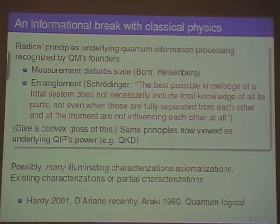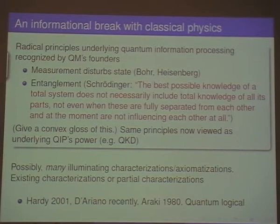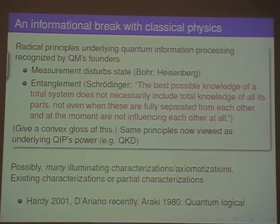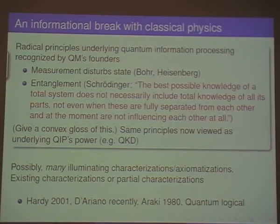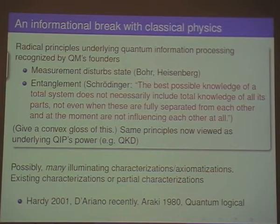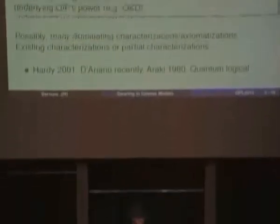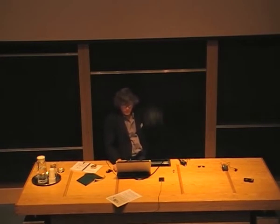The basic ideas that disturb them have a lot to do with information: the idea of a state associated with the gathering of information necessarily causing disturbance. Schrodinger's description of entanglement — where he said the best possible knowledge of the total system doesn't necessarily mean we have total knowledge of all its parts even when these are fully separated from each other. The way I would understand that is to say, in quantum theory, even if the composite system is in a pure state, the marginal systems can be in mixed states. There may be many different illuminating characterizations of quantum theory in terms of information — Hardy has a nice partial axiomatization, Dariano has done some work on this, and there's also the quantum logic approach.